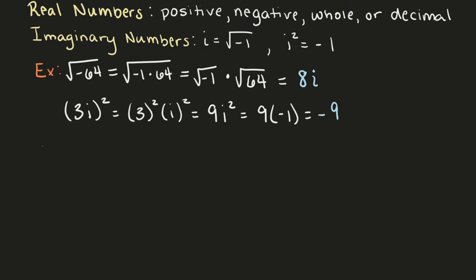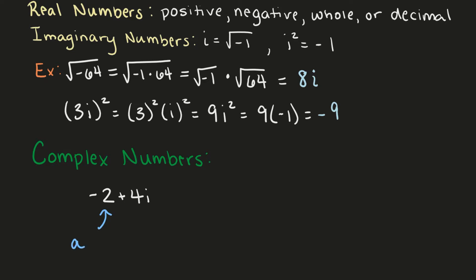So some examples of complex numbers would be negative 2 plus 4i, where negative 2 is your A and 4i is your Bi term; 7 minus 3i; and 12 plus 6i.